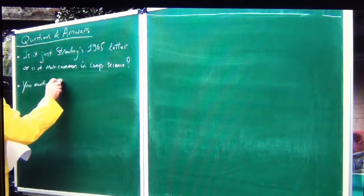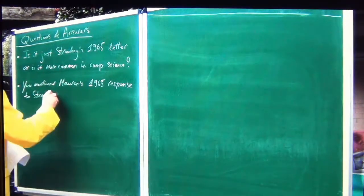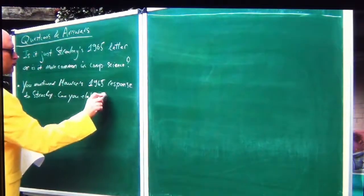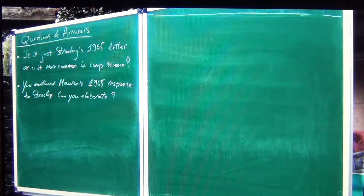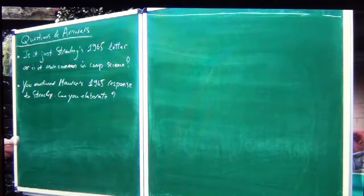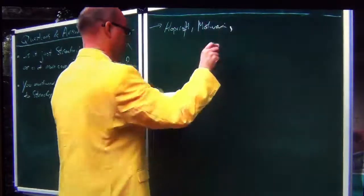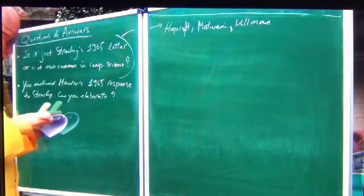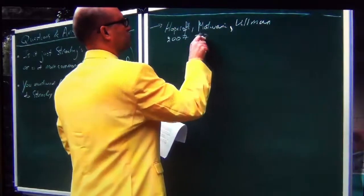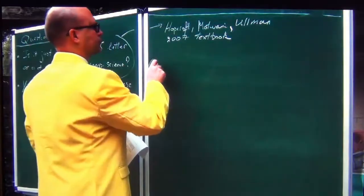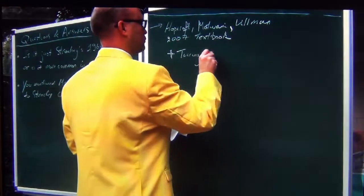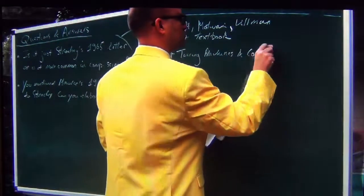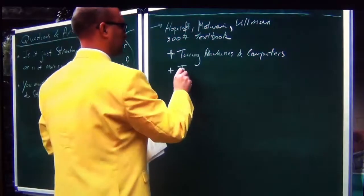The second question: you mentioned Maurer's 1965 response to Strachey — can you elaborate? Yes, I can. I'm going to present the work of Hopcroft, Motwani, and Ullman, based on their 2007 textbook, to show that Strachey's alleged proof is far more common than some people might presume. I will discuss two sections in their book: Turing machines and computers, and Turing machines and computer programs.